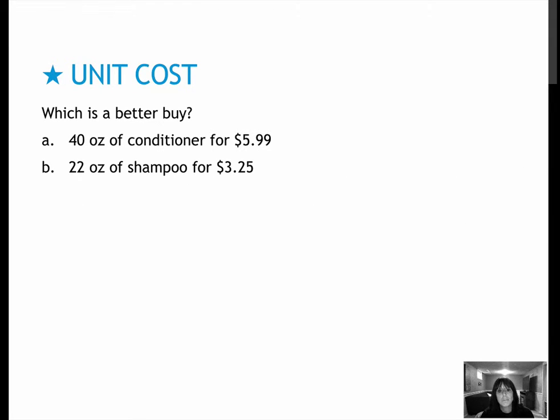If you want to buy some conditioner, which is the better buy? Again, it makes more sense to do price per ounce. So for my first, I would do $5.99 over 40 ounces. And for my second, I would do $3.25 over 22 ounces. Use your calculator to compute both of those prices.